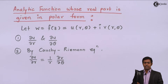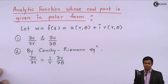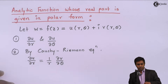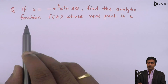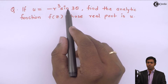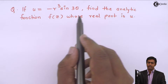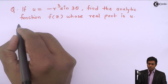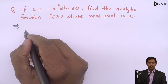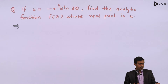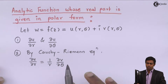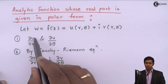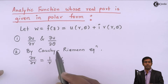To understand this concept, let's take one numerical example. Here we have U given as minus R cubed sine(3θ), and we have to find the analytic function whose real part is U. Let's see how we solve it. From U, we will find the values of ∂U/∂R and ∂U/∂θ.